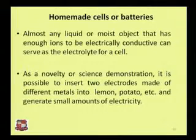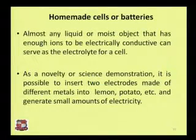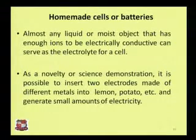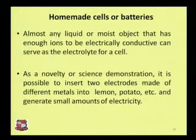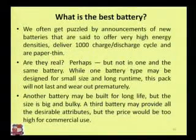These homemade cells can't be used in real industrial or commercial applications — they're just for making toys or demonstrations. In a lemon there is citric acid, and in a potato there is phosphoric acid; salt water or oranges can also be used. A copper wire can serve as the first electrode and zinc as the second, as they react properly. Iron, magnesium, and lead can also be used as electrodes.